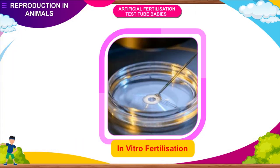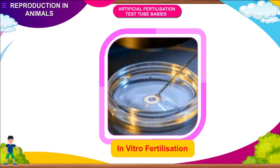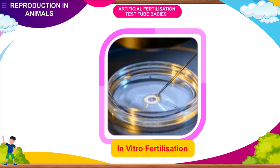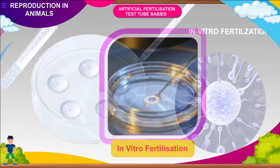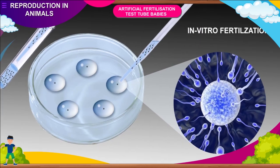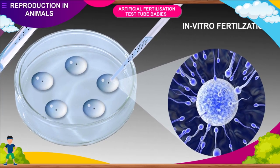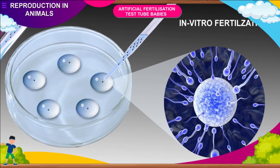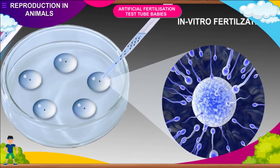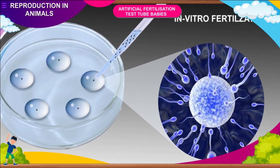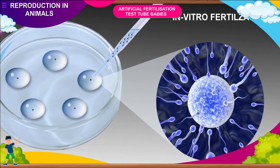In Vitro Fertilization (IVF): in IVF, the eggs are produced under local anesthesia by aspirating follicles under ultrasound control. They are then incubated with frozen sperms and transferred to the growth medium.